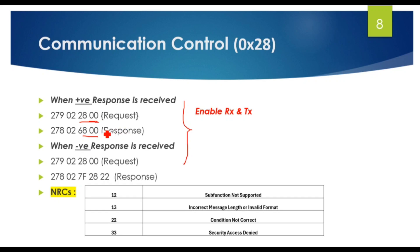The positive response will be 0x6800. So like this, you can stop all the TX messages, do your diagnostic, and then again enable RX and TX messages. For negative response cases, the same type of NRC will be received.